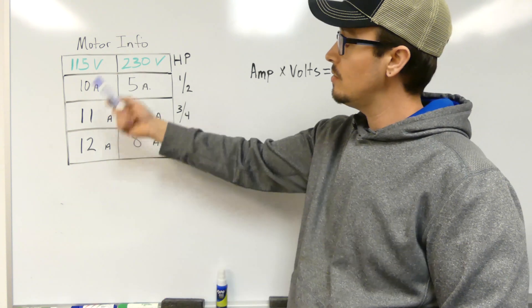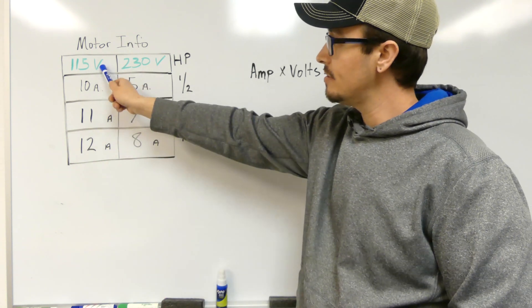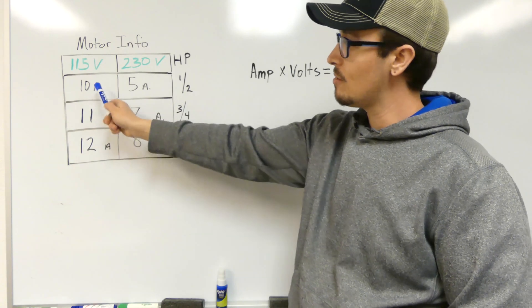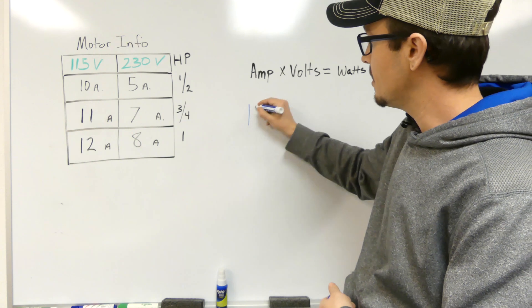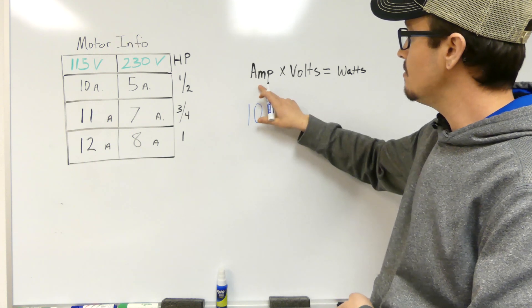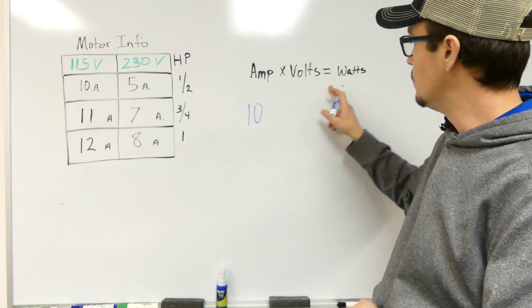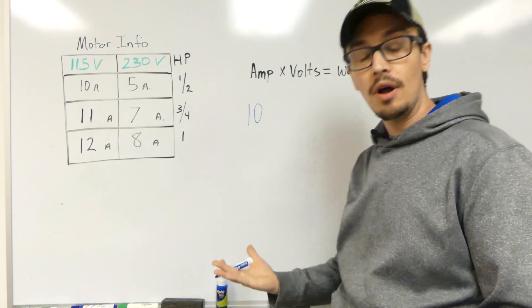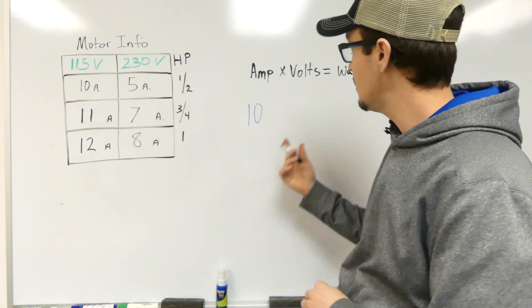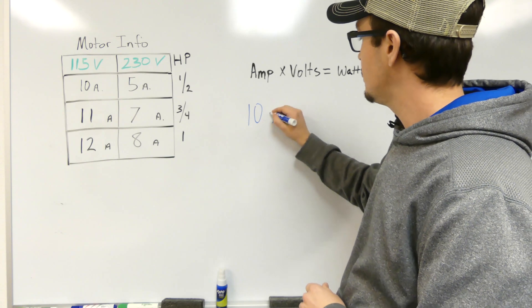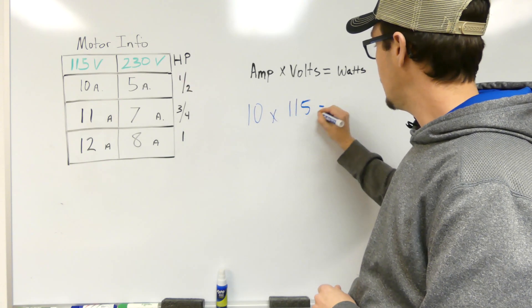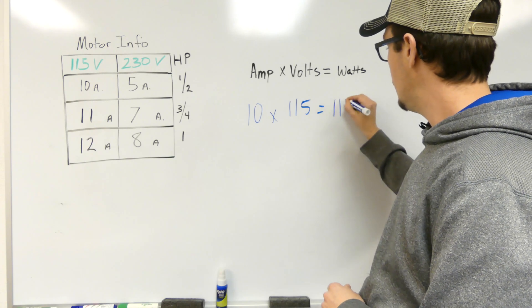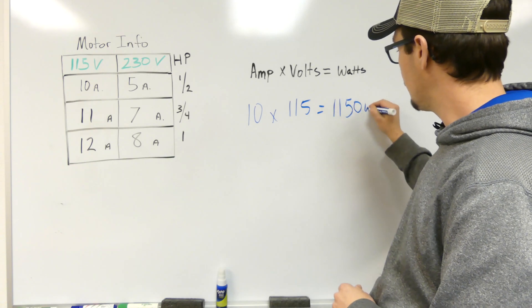So for our example, 115 volt half horsepower pump is at 10 amps, so we're gonna put 10 here because in our formula amps times volts equals watts. So times our volts, which is going to be 115, and we end up with 1150. So that's our watts.